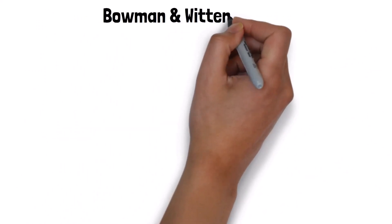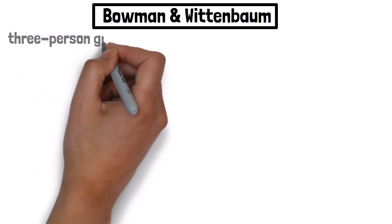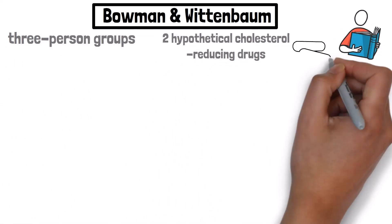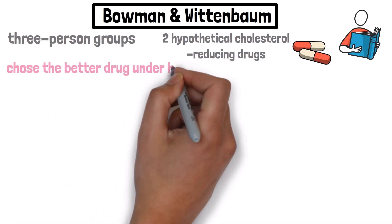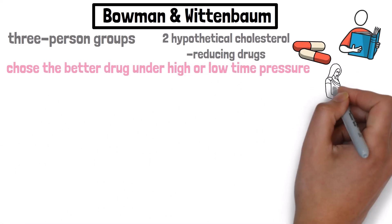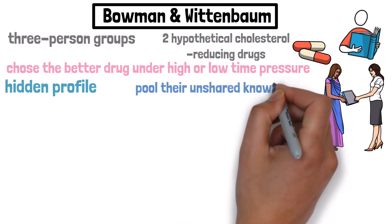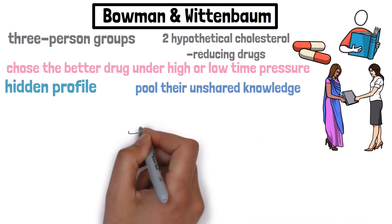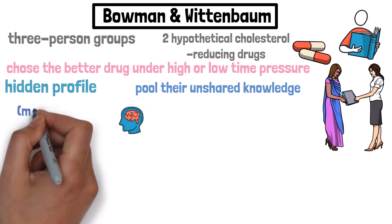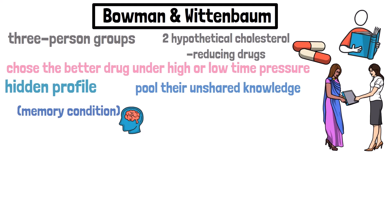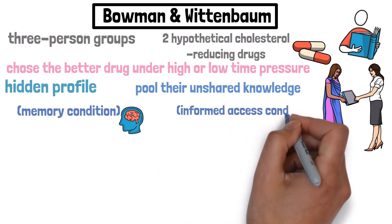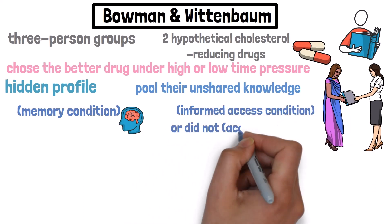Bowman and Wittenbaum conducted an experiment where members of three-person groups read information about two hypothetical cholesterol-reducing drugs and collectively chose the better drug under high or low time pressure. Information was distributed as a hidden profile such that the information supporting the better drug was unshared before discussion. Some groups discussed the drug information from memory — the memory condition. Others kept the drug information during discussion, accessing sheets that either indicated which pieces were shared or unshared — the informed access condition — or did not indicate this — the access condition.